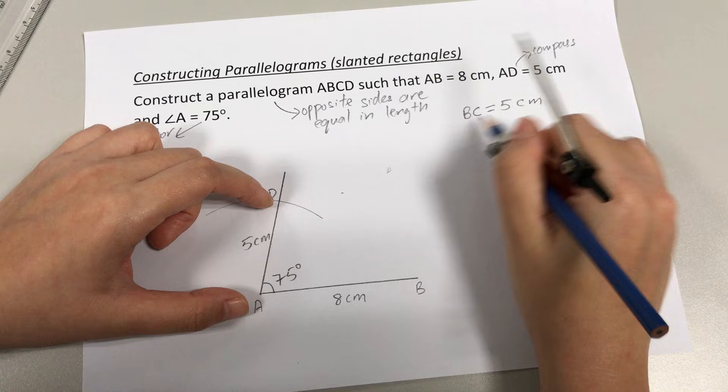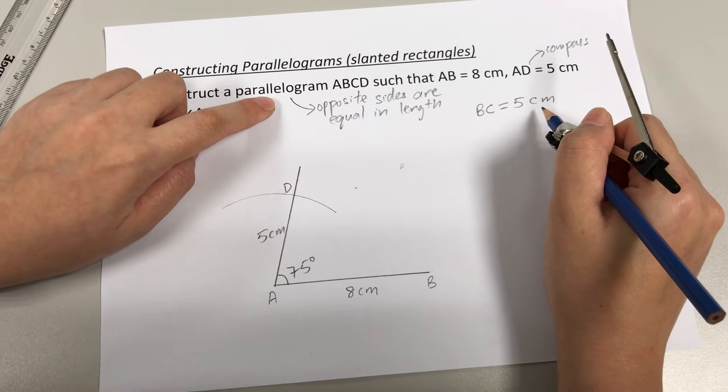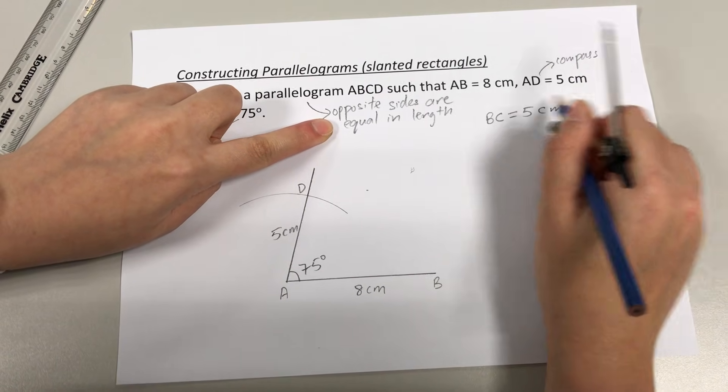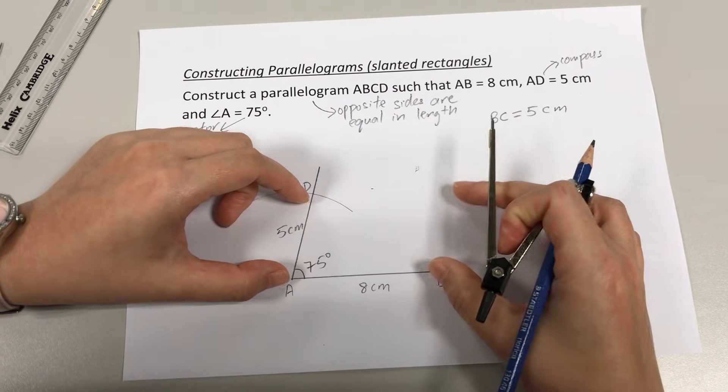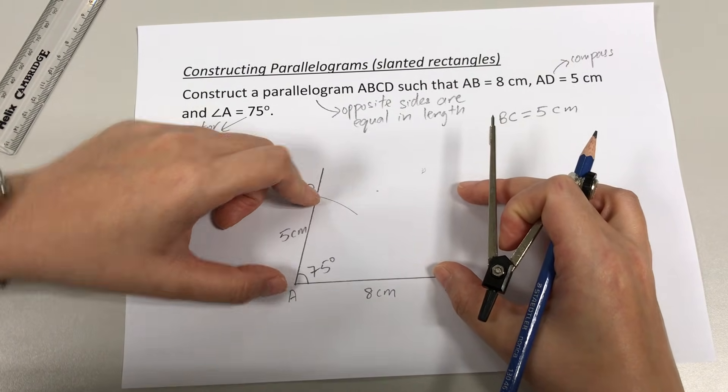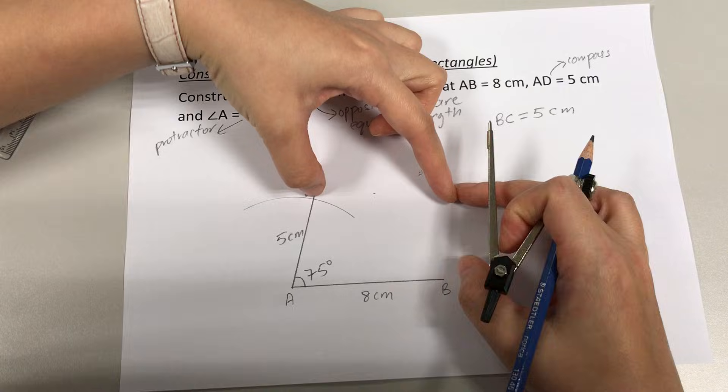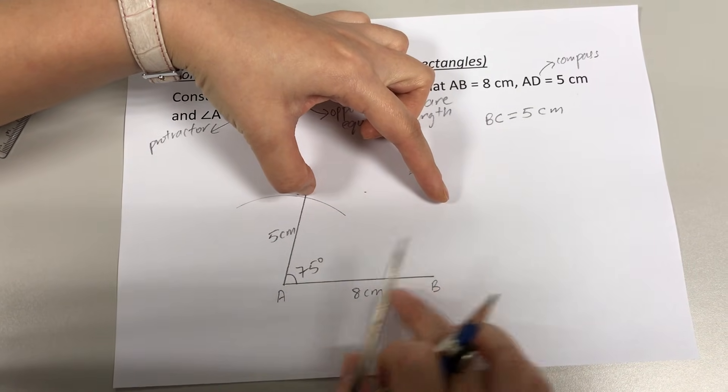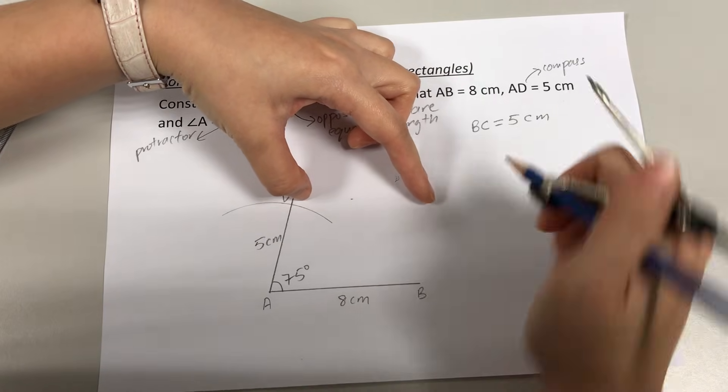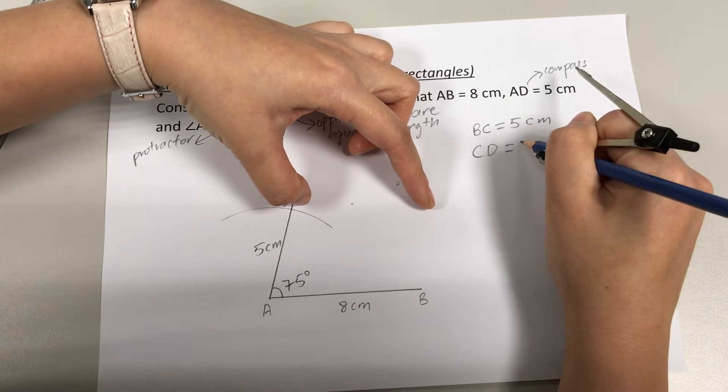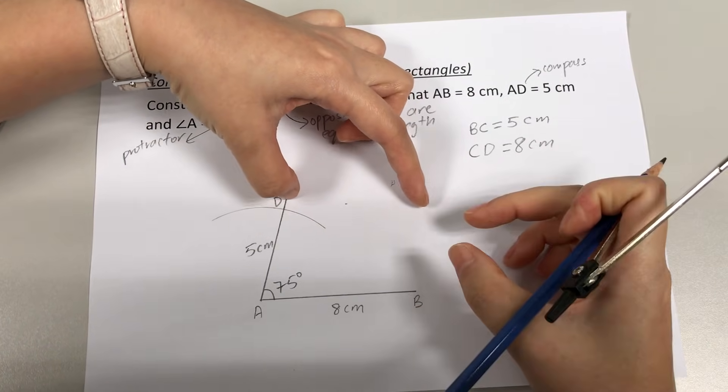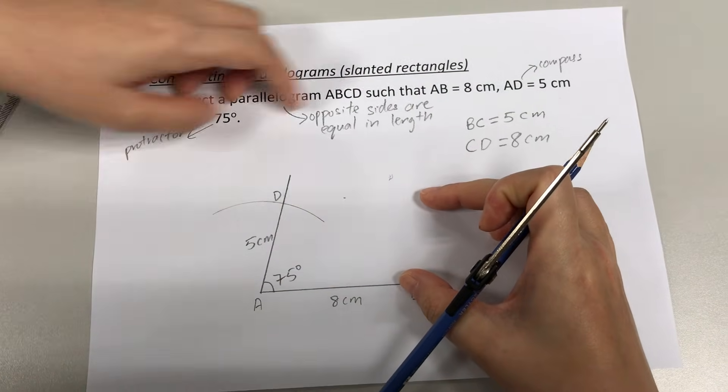I actually have an additional length that I know, that BC equals to 5 cm. Take note that this information will not be given because the question has told you that it's a parallelogram, so you are supposed to know this property to be able to deduce that BC is actually also 5 cm. If I know BC is 5 cm because opposite sides are equal, I can also know the length of the side opposite to AB. Knowing AB is 8 cm, my side opposite to AB is CD, it will likewise also be 8 cm.